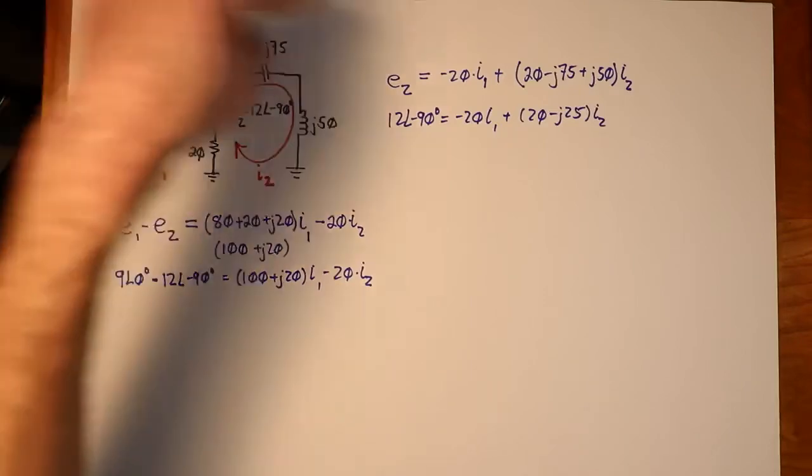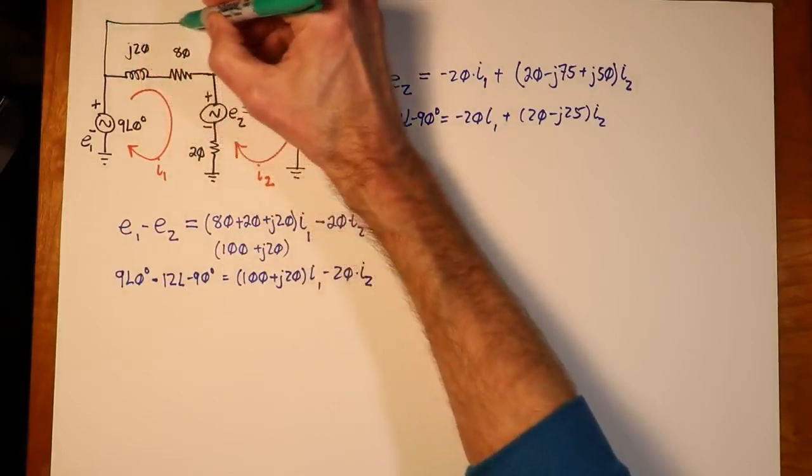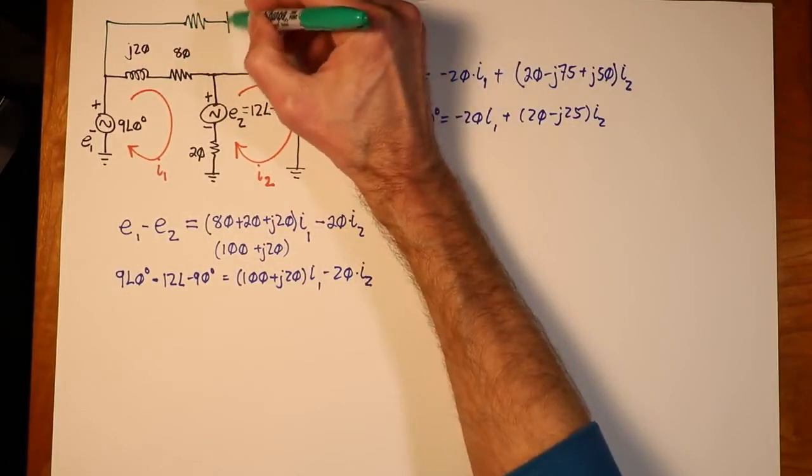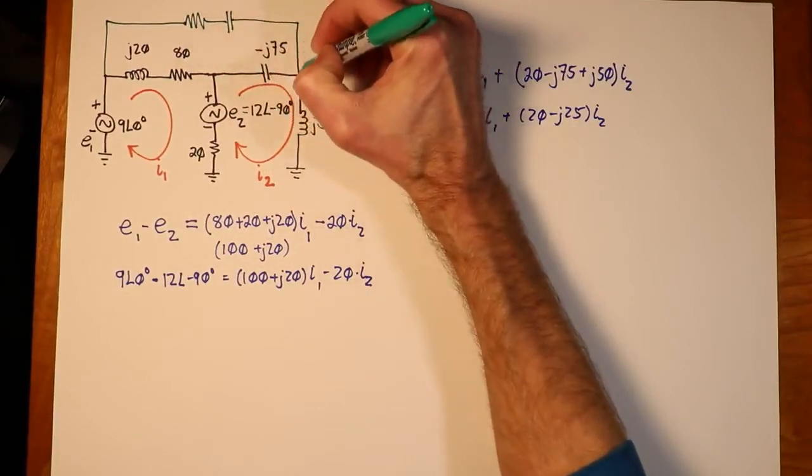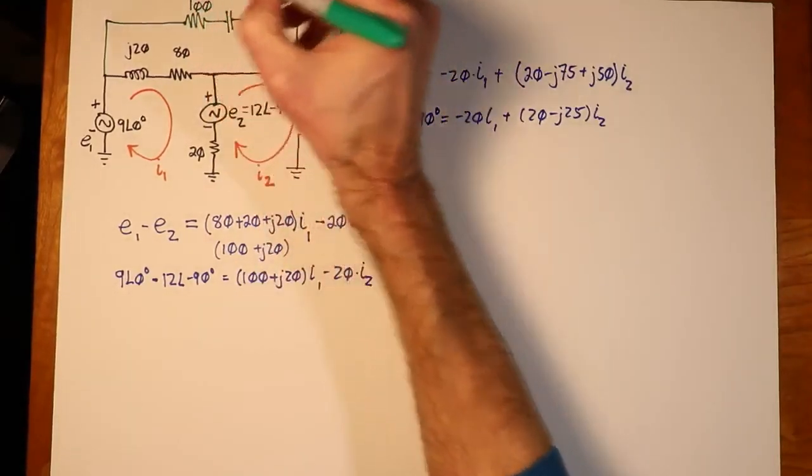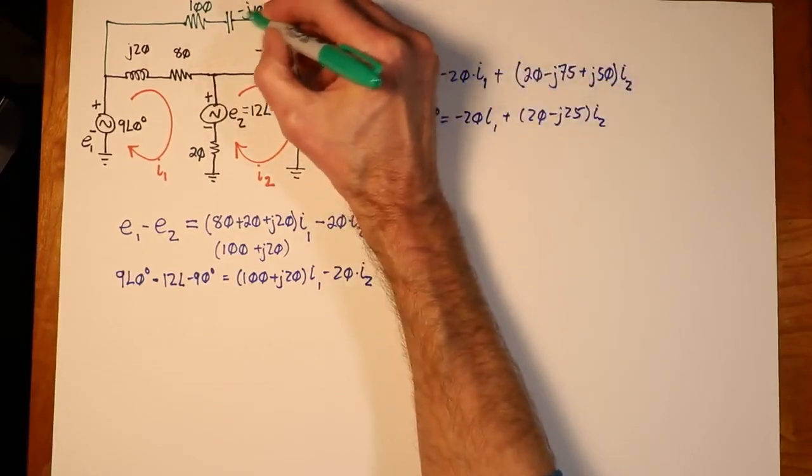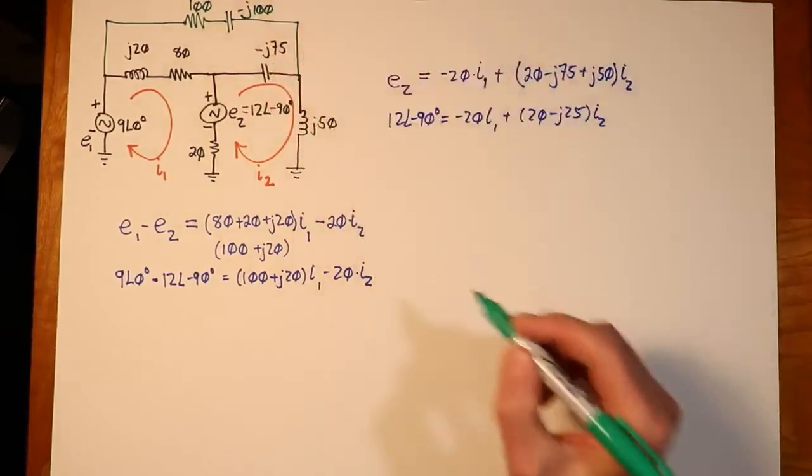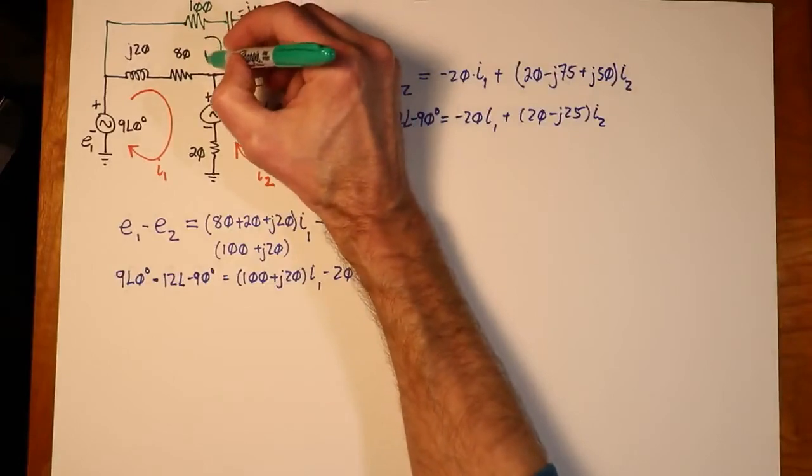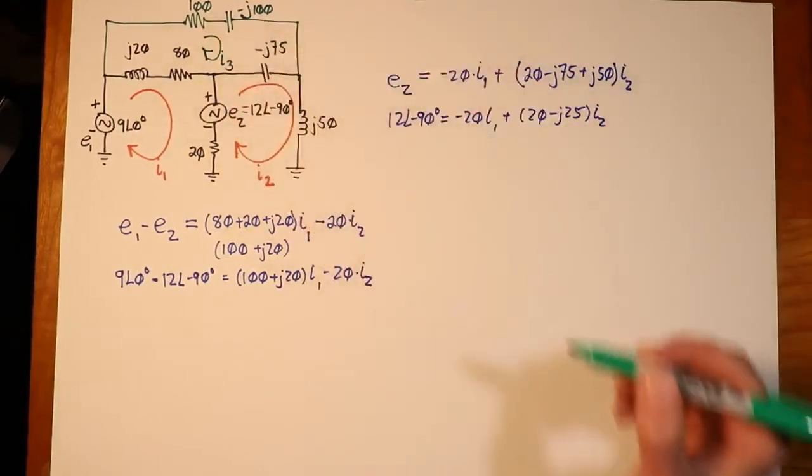Let's modify this circuit just a little bit, just to show you how quick this can, in fact, be. So what I'm going to do is I'm going to add a little bridging element up here. Let's add a capacitor here. Let's say that's, I don't know, maybe 100. Maybe this is, let's call it minus J100. How would this change? I'm going to make this the third loop. Let's keep these two loops the way they are.